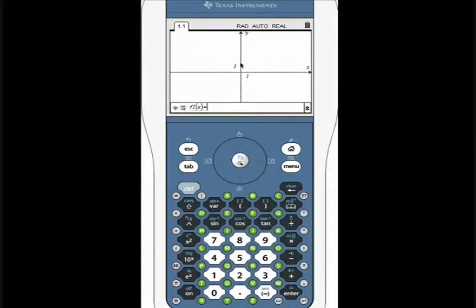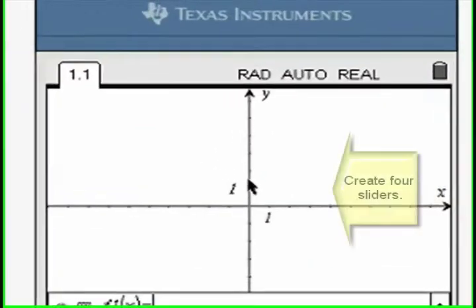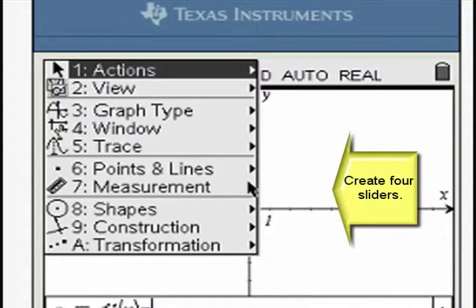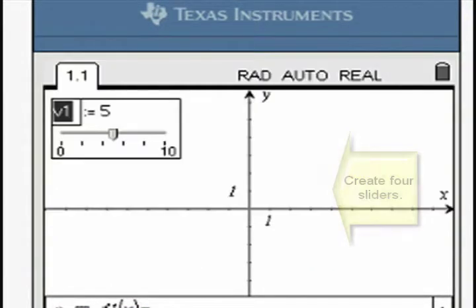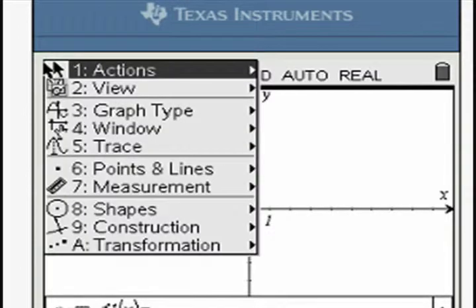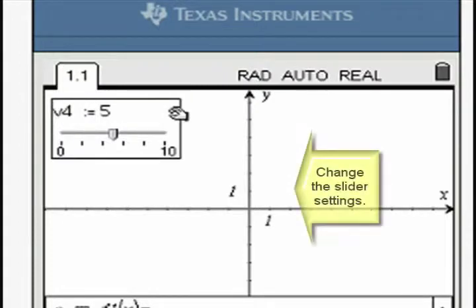Open a new graph window and create four sliders. As you create them, the sliders are stacked atop one another.